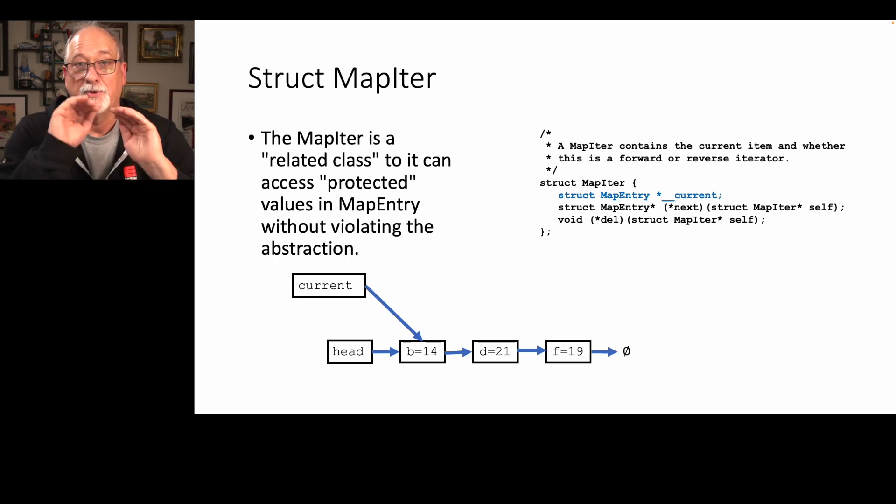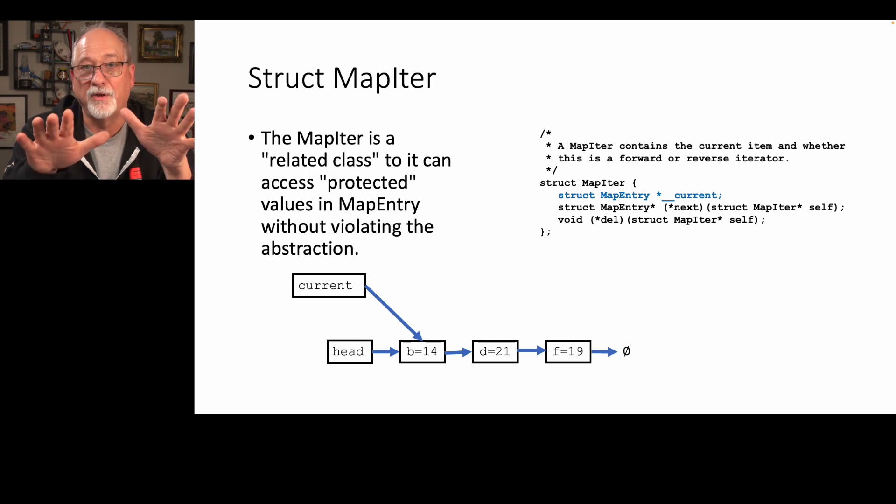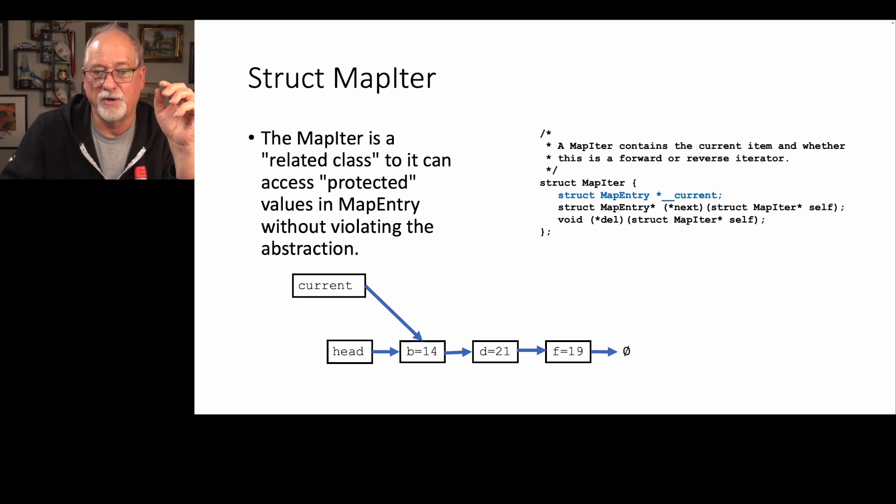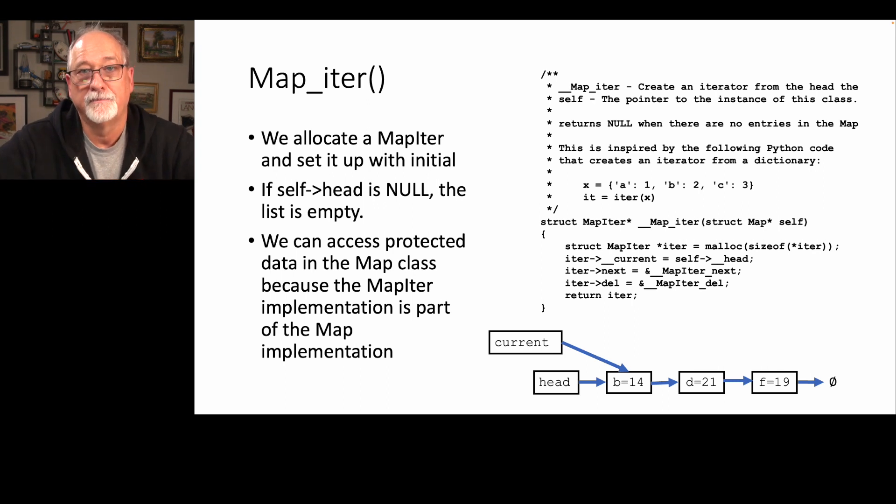The only public things we have are a next method and a del method. And so now what we have is a simple contract. You can see our kind of outside contract for this class is it's created by the map class. But once it's constructed, next and del are the only thing that you can do with this. And then we get to decide inside this class. And so when we construct it, we're basically going to start it. We're going to allocate the right size. We're going to take the current and point it at the first item pulling from the head of the linked list. And then we're going to set the two methods, next and del, based on the address of the implementations of the functions that implement it. And then we're done.